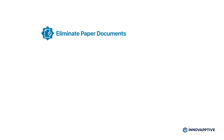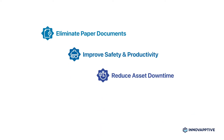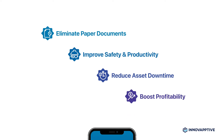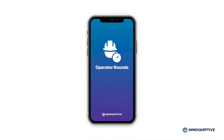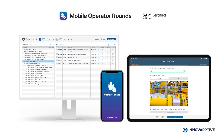If you would like to eliminate paper-based preventive maintenance processes, improve safety and productivity of your workers, reduce asset downtime, and boost profitability, then you need Mobile Operator Rounds by Innovaptive. Innovaptive's SAP-certified Mobile Operator Rounds solution simplifies the planning and execution of your preventive maintenance programs.